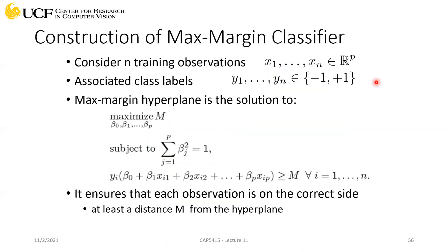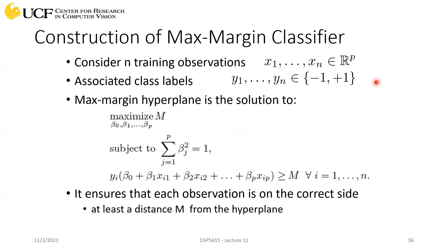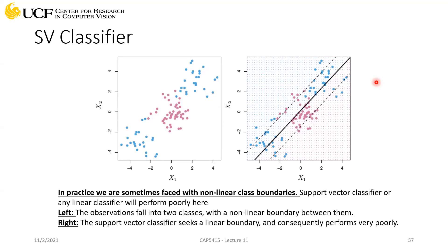Last time we were talking about max margin classifier and support vector classifier. They are almost similar — the only difference is max margin makes sure there is a minimal margin between the support vectors, but in SV classifier we relax that and allow some points to cross the boundary. The next question was: what if we don't have a linear boundary, which is actually the case in most real-world datasets?